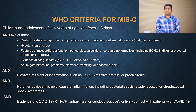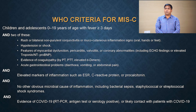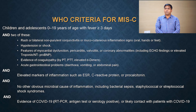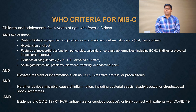There is a WHO criteria to define this condition. The child or adolescent between 0 to 19 years of age who presents with fever of more than 3 days and any 2 of the following 5 criteria: rash or bilateral non-purulent conjunctivitis or mucocutaneous inflammatory signs in the form of oral, hand, and feet inflammation; hypotension or shock; features of myocardial dysfunction, pericarditis, vulvulitis, or coronary abnormality including echo findings or elevated troponin or NT-proBNP; evidence of coagulopathy in the form of raised PT, APTT, and elevated D-dimers.